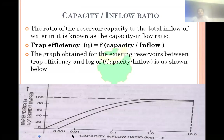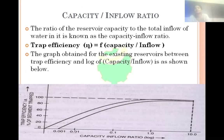Now, to calculate the capacity inflow ratio — the ratio of the reservoir capacity to the total inflow of water in a year is known as the capacity inflow ratio. For example, if the capacity of the dam is 100 MCM and the daily inflow is 10 MCM, then the capacity inflow ratio is 100 by 10, that is 10. That is the capacity inflow ratio.